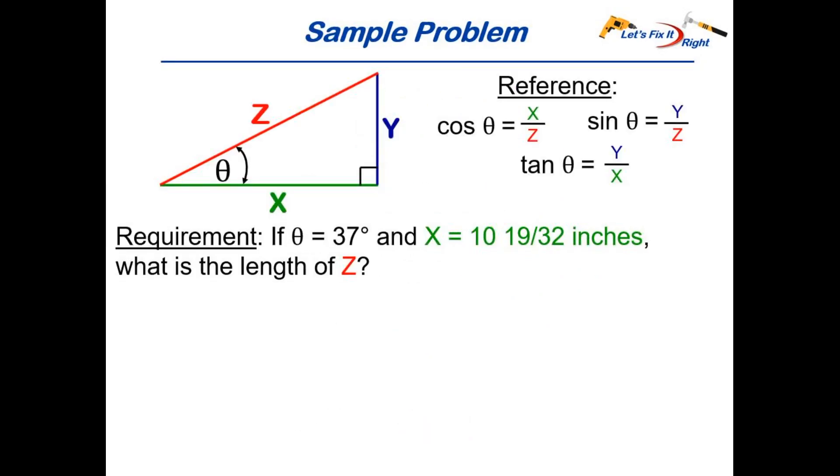With these reference definitions in hand let's perform a simple calculation before moving to our staircase trig calculations. Our given requirement is if the angle theta equals 37 degrees and the horizontal side X equals 10 and 19/32 of an inch, solve for the length of Z or the hypotenuse.